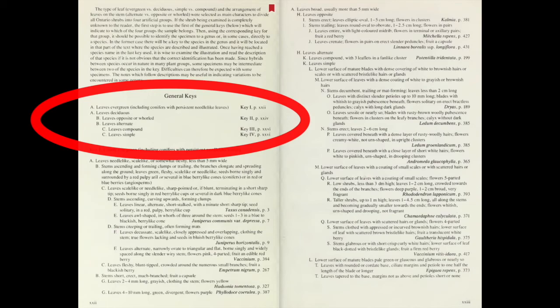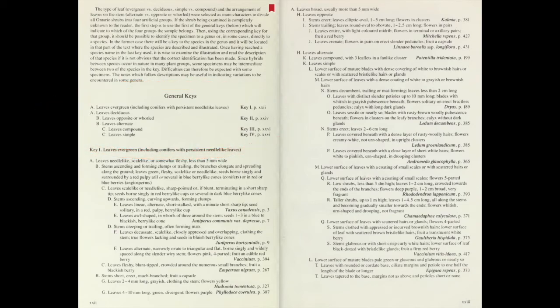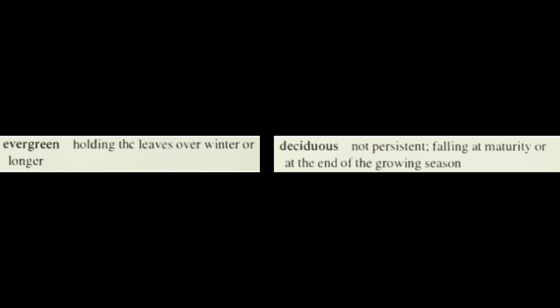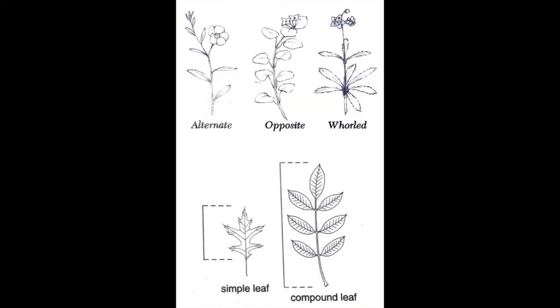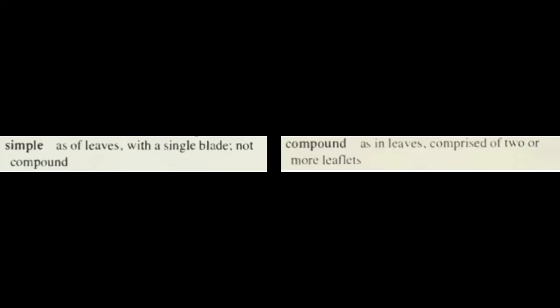This book divides shrubs into four artificial categories based on the leaf type, which can be either evergreen — meaning the leaves persist in winter — or deciduous, meaning the plant sheds its leaves in the fall. The leaf arrangement is the next thing we will need to know and can be alternate, opposite, or whorled. The leaf type can then be simple or compound. A simple leaf is just one single leaf on a leaf stalk that attaches to the twig. A compound leaf is one that is composed of smaller leaflets on a leaf stalk, then attached to the twig.